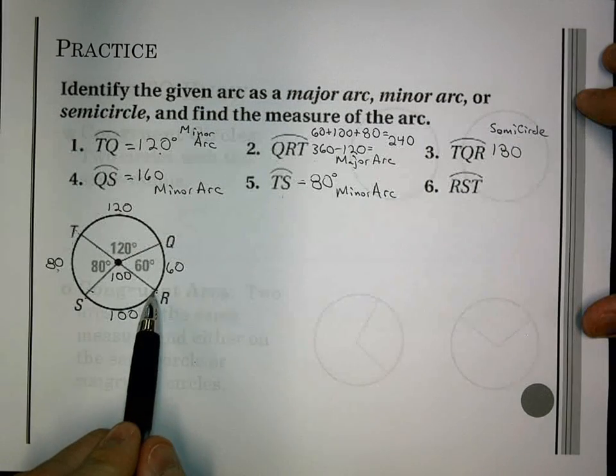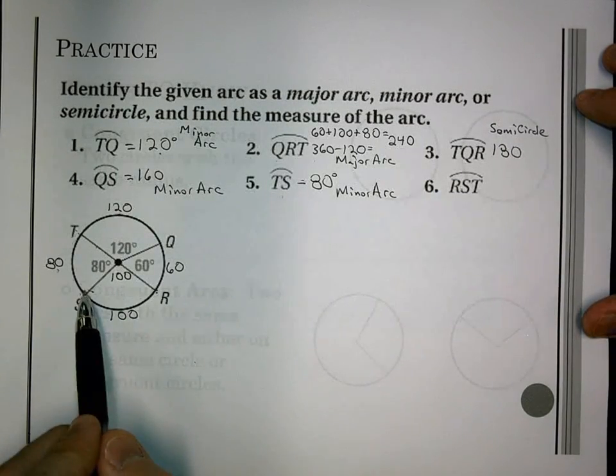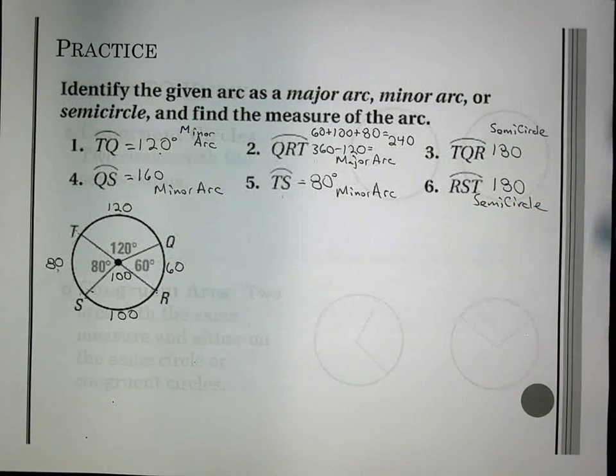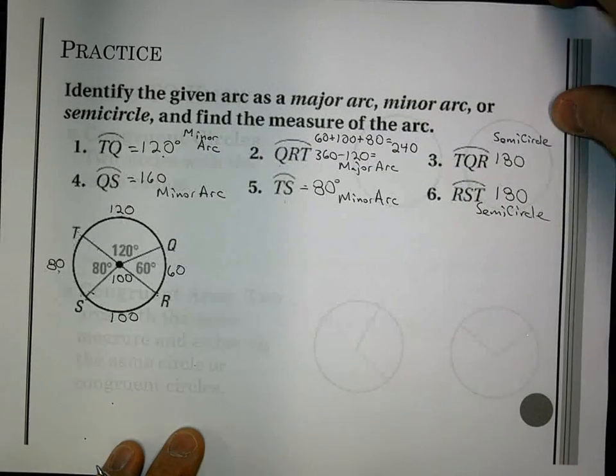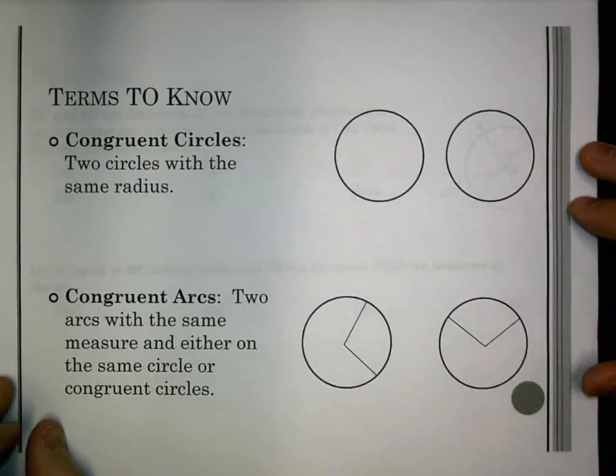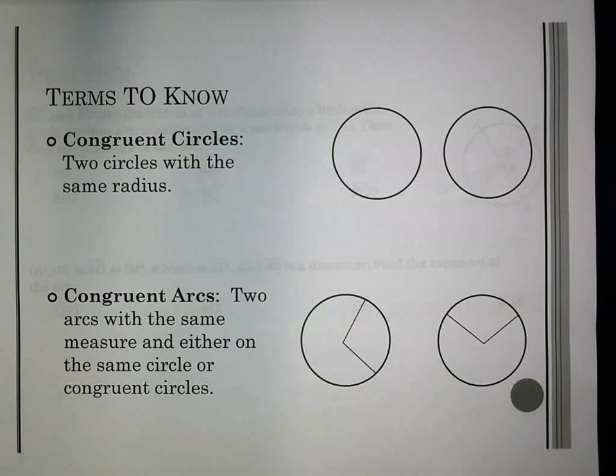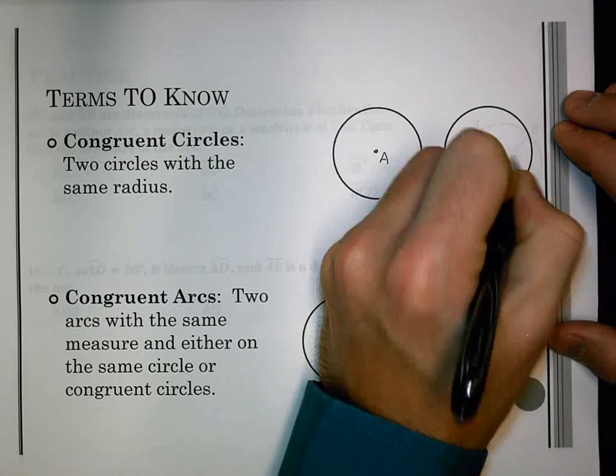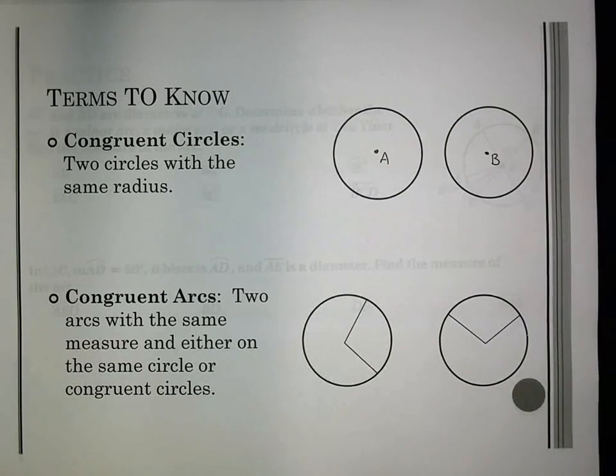And last, R, S, T, starts at R, goes through S, ends at T, add 80, and 100, it is 180, so it is a semicircle. Okay, our last two terms we have are congruent circles and congruent arcs. And we spent a lot of time looking at congruent triangles a few chapters ago. So, this one's going to be a little nicer for congruent circles. Because, let's say I have two circles, A and B. We have to look, what are certain ways we have to measure A and B, or any circle for that matter?